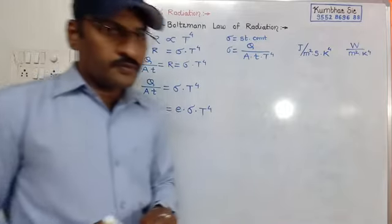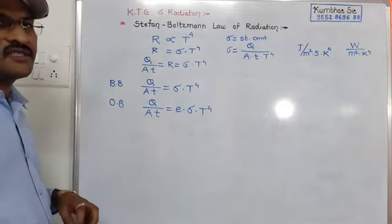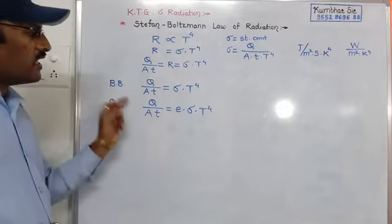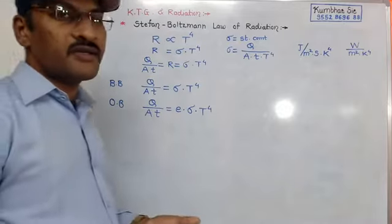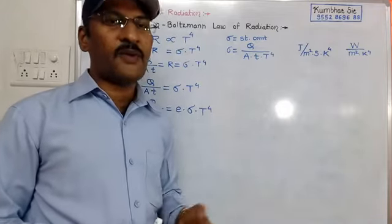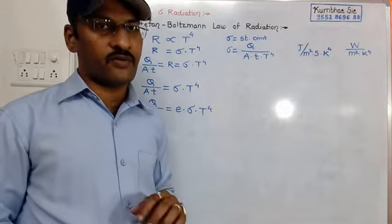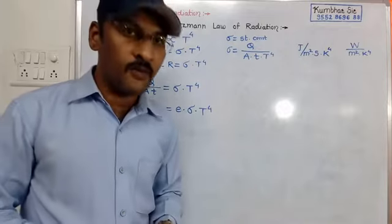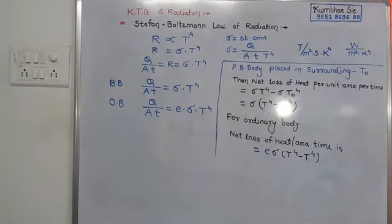Now consider any body — ordinary body or perfect black body — placed in a surrounding whose temperature is T₀. What is the Stefan's formula in this situation?